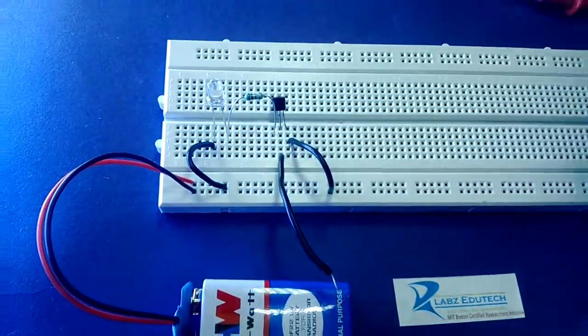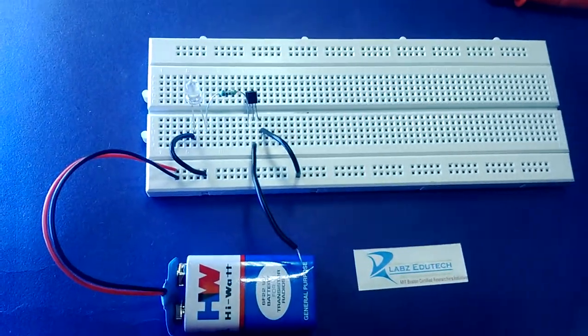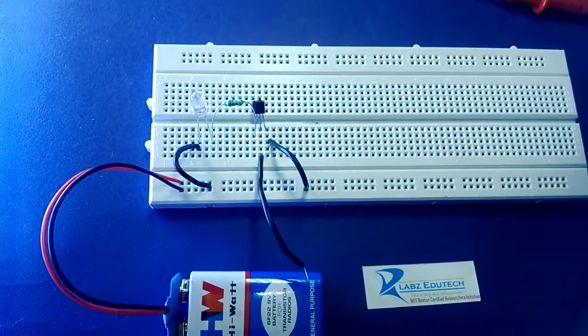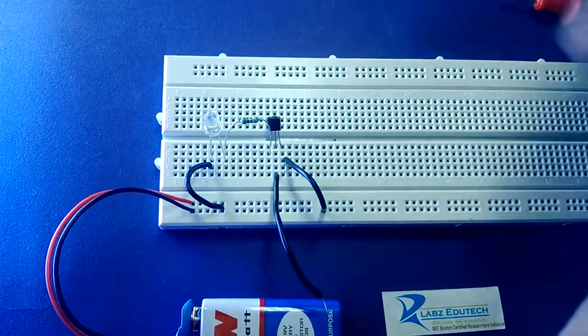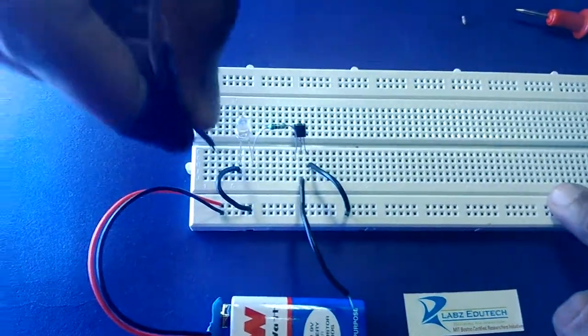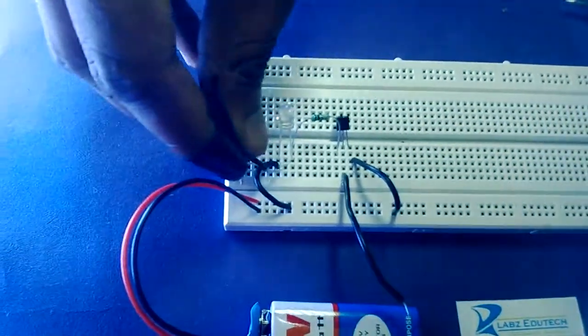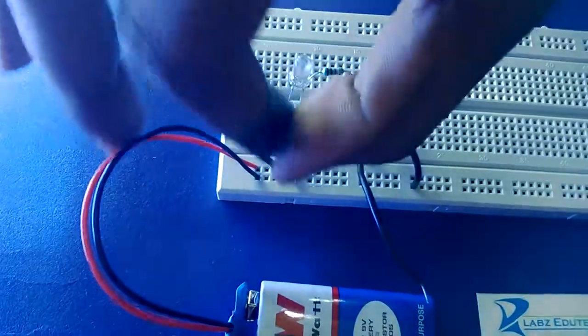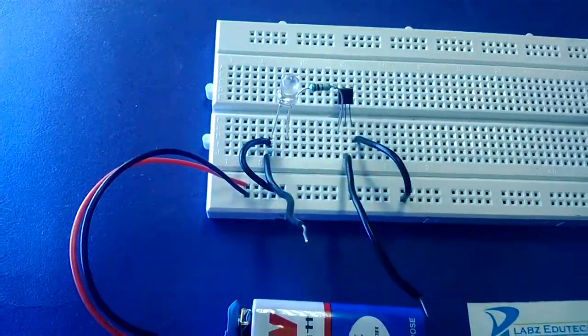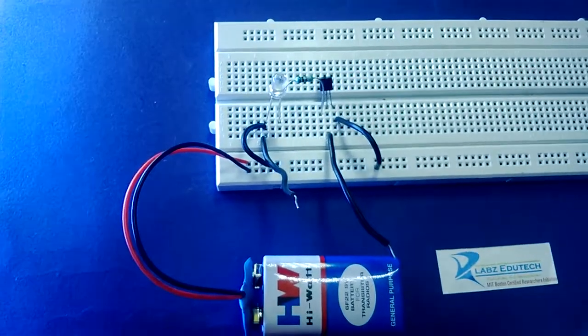Now next what we have to do? We are going to connect one wire with the positive of our LED like this way. Yeah exactly. Now the magical circuit has been ready.